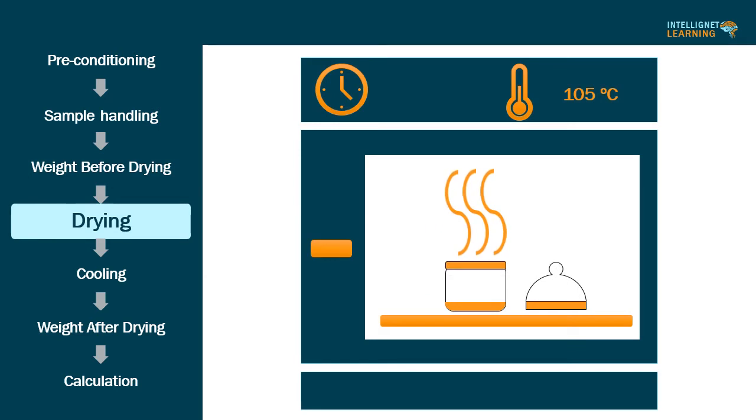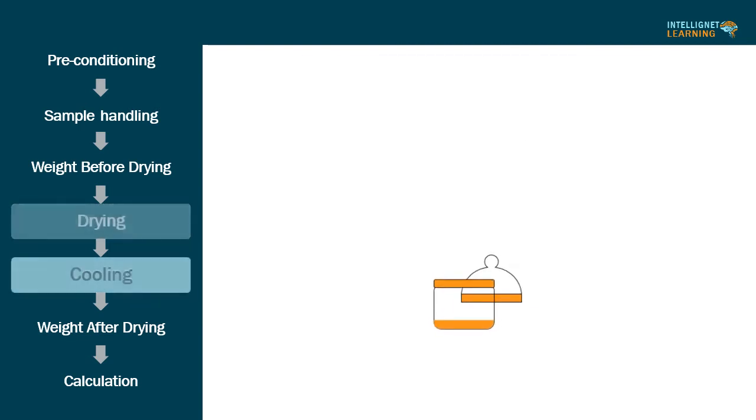Fourth step, drying: Place the loaded bottle in the drying chamber. Remove the stopper and leave it also in the chamber. Dry the test specimen at the specified temperature and time conditions. The temperature specified in the method of analysis is to be regarded as being within the range of plus or minus 2 degrees Celsius of the stated value.